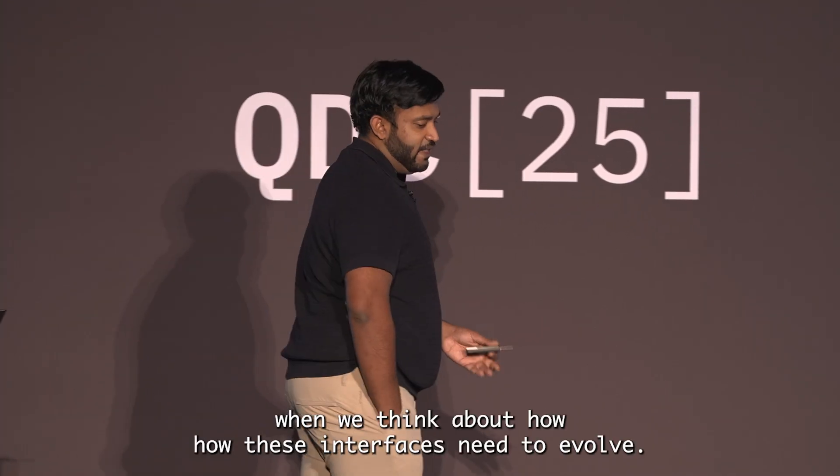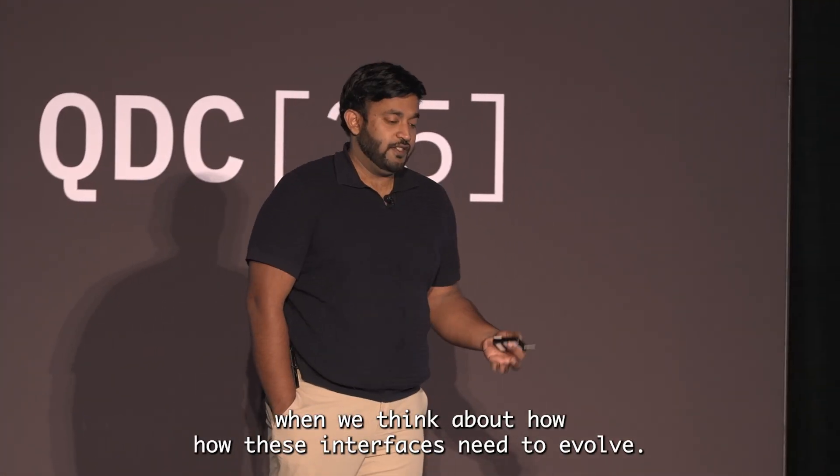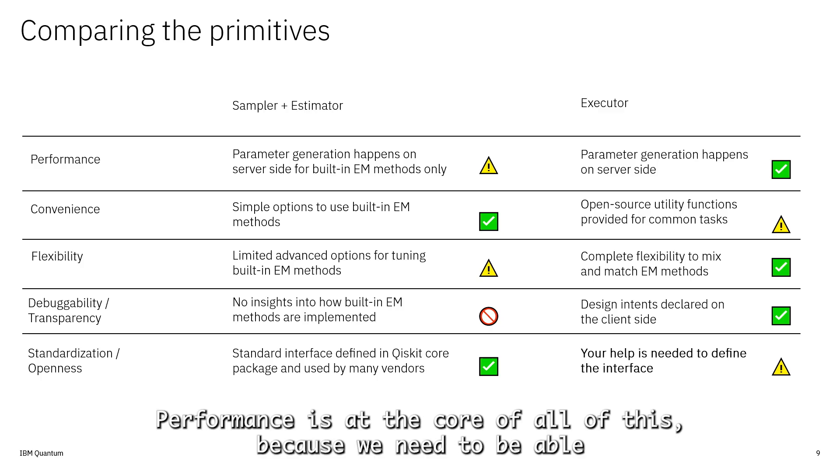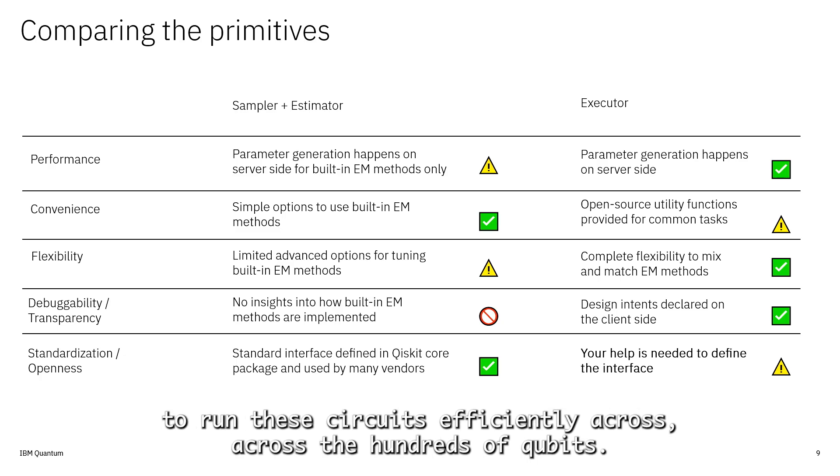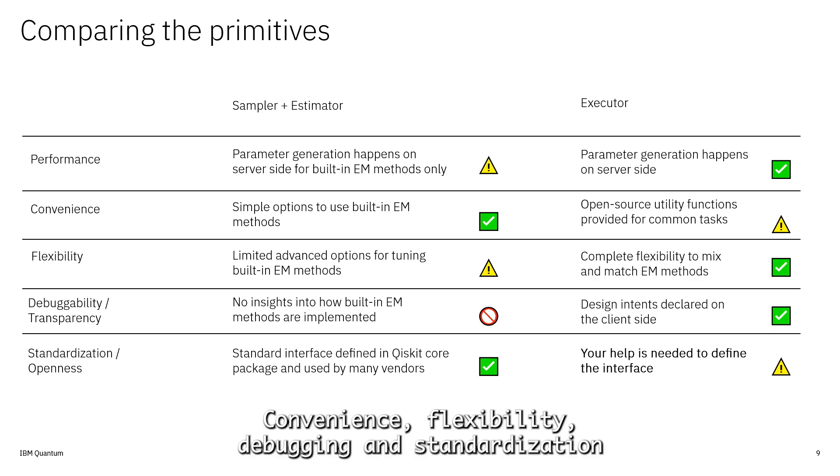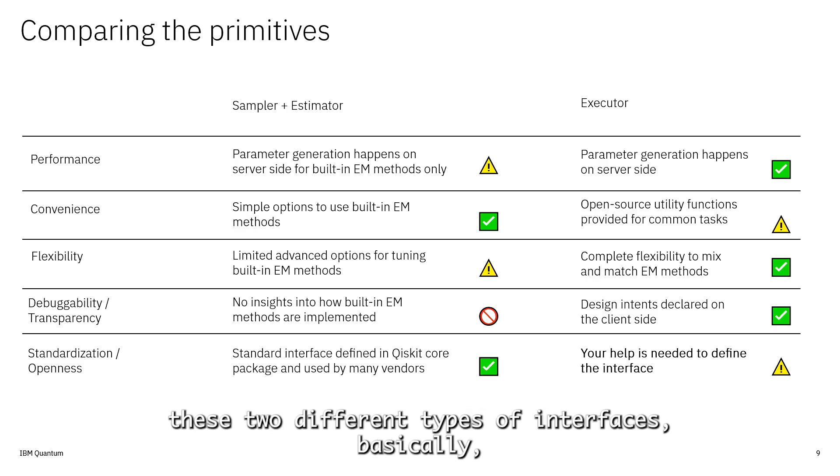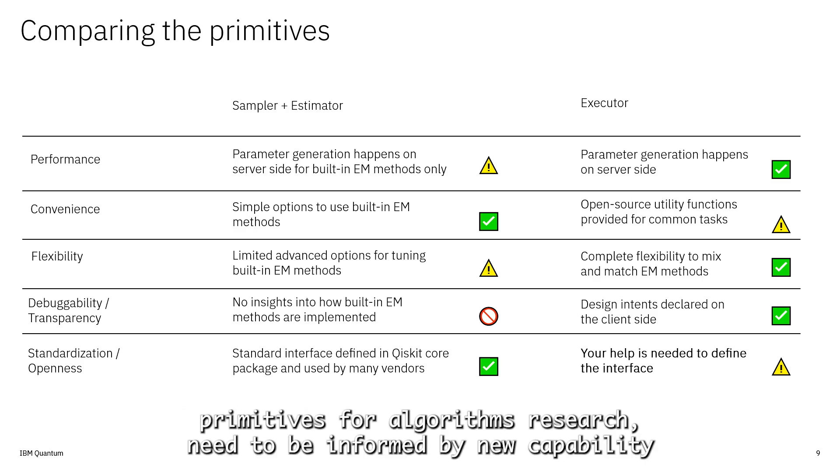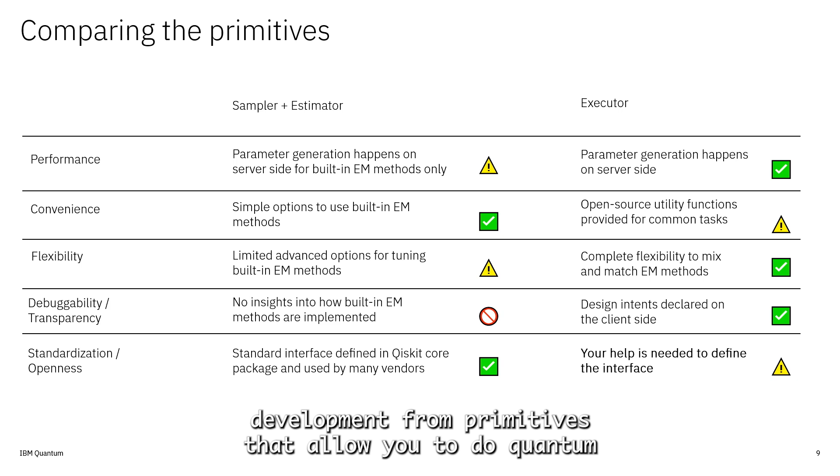Here are about five different things we're considering when we think about how these interfaces need to evolve: performance is at the core because we need to run these circuits efficiently across hundreds of qubits. Convenience, flexibility, debugging, and standardization are going to help us develop new capabilities. Ultimately, primitives for algorithm research need to be informed by new capability development from primitives that allow you to do quantum information science.